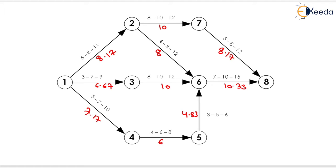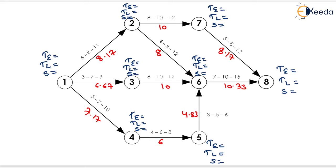Now we will calculate the TE, TL, and slack for each event. For event 1 the TE will be equals to 0. For event 2 it will be equals to 0 plus 8.17, so it will be equals to 8.17. Similarly for event 3 it will be equals to 0 plus 6.67, so it will be equals to 6.67. Similarly for event 4 it will be equals to 0 plus 7.17, so it will be equals to 7.17.